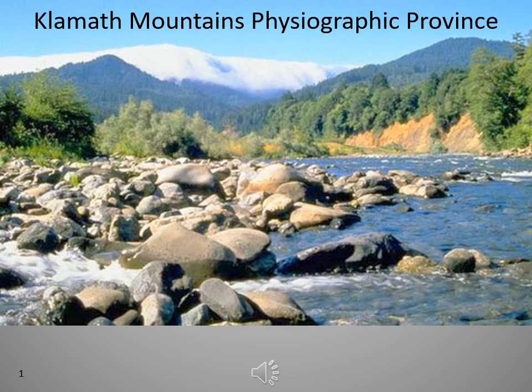The major tributaries of the Klamath River are the Shasta, Scott, Salmon, and Trinity Rivers in California, and the Applegate and Illinois Rivers in Oregon. The third largest watershed in the province is the Chetco, that heads in the Chameopsis Wilderness and flows southwesterly to meet the ocean at Brookings.